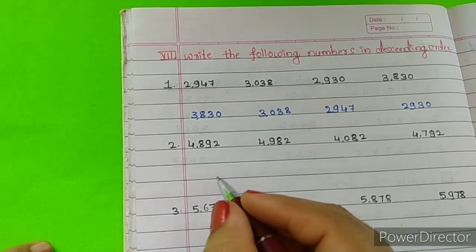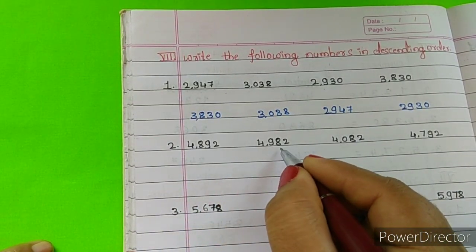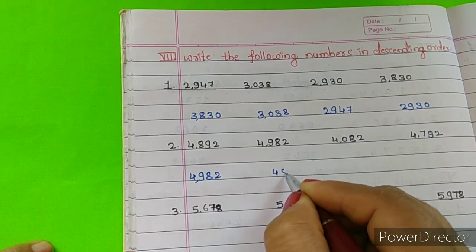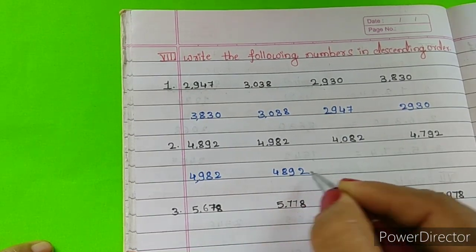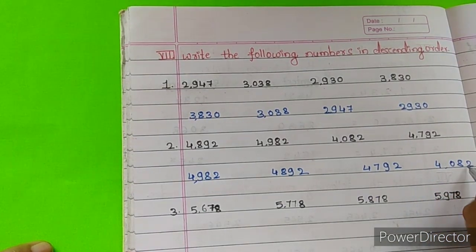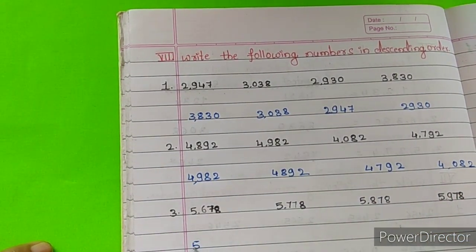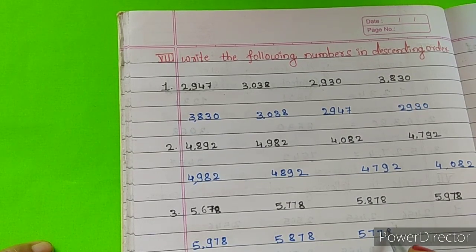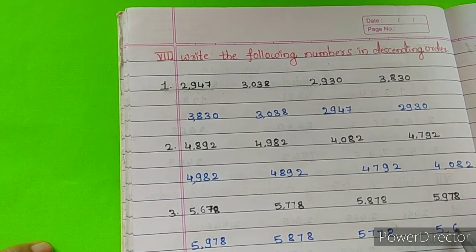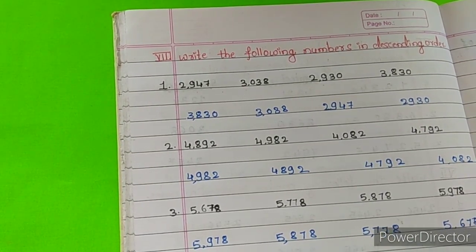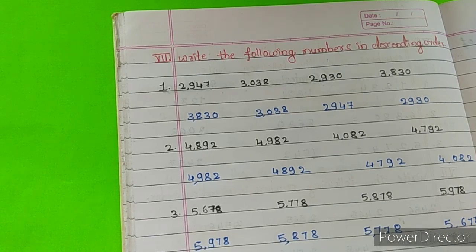Next problem: 4,982; 4,792; 4,082 — descending order gives 4,982 first, then 4,792, then 4,082. Another problem: 5,978; 5,878; 5,778; 5,678 — in descending order: 5,978; 5,878; 5,778; 5,678. This is your first revision exercise completed. Thank you, dear children.